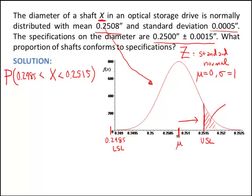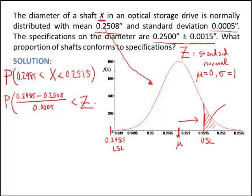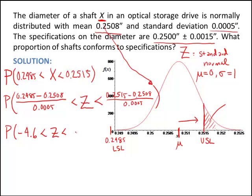My goal is to convert these values to standard normal values. To do this, I take the value, subtract off its mean of 0.2508, and divide by its standard deviation. When I take x, subtract off its mean, and divide by its standard deviation, it becomes a standard normal z. Converting the upper specification limit: 0.2515 minus 0.2508 divided by 0.0005. The resulting z-scores are negative 4.6 less than z less than 1.4.